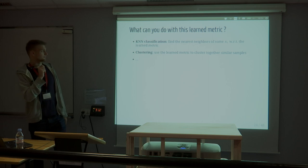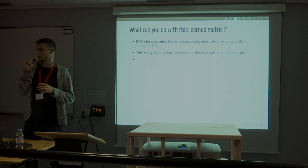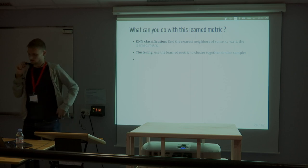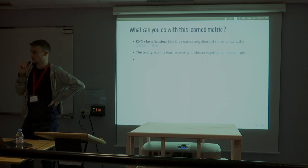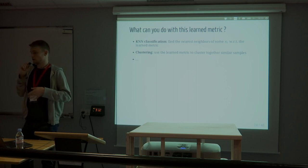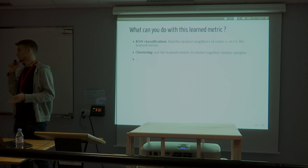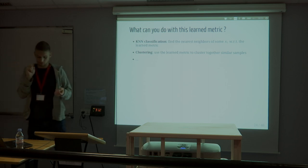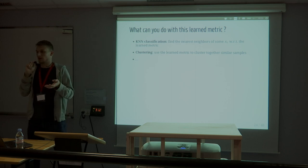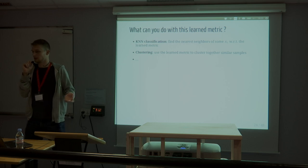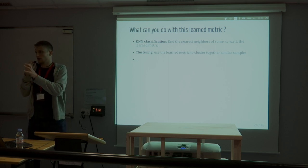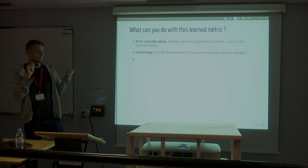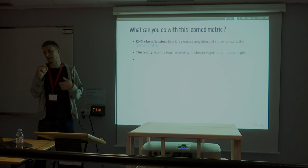Once you have learned this metric, you can do k-nearest neighbors classification, and also clustering. Often when you do clustering, it's unsupervised — you don't give information. The problem is it might not cluster as you want; for instance, it could cluster points with the same face orientation together rather than the same person. Metric learning allows you to give information that can be used for clustering to guide it toward what you want.